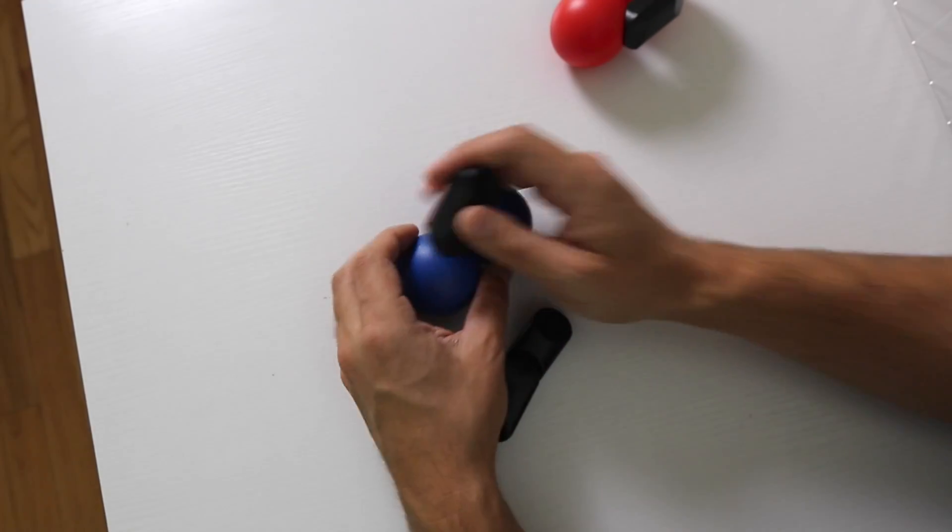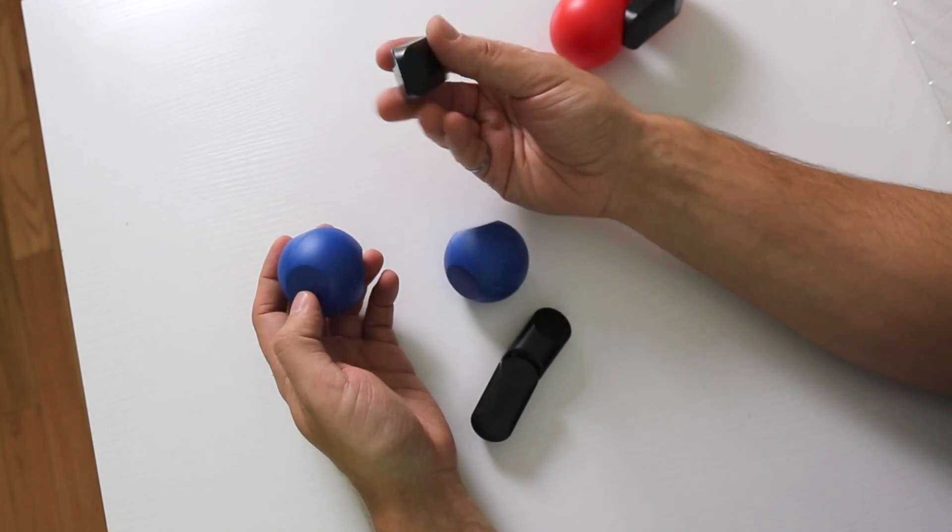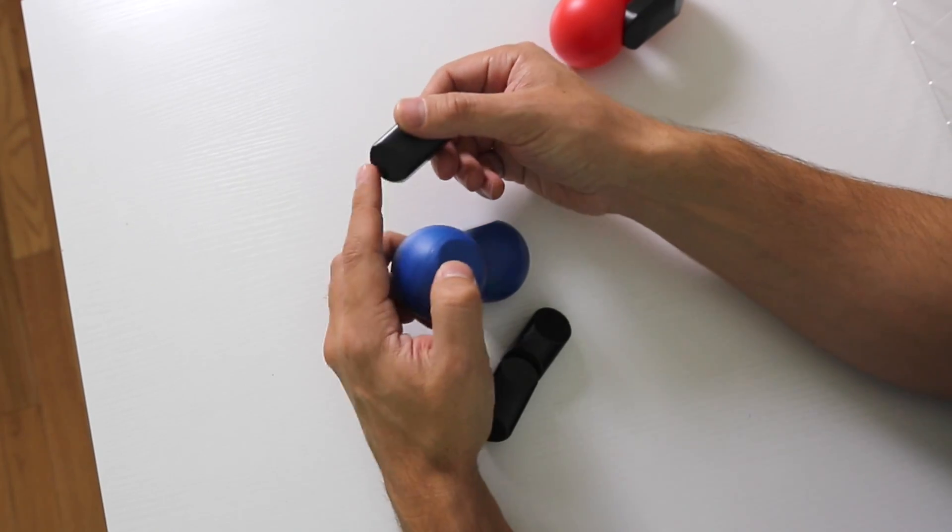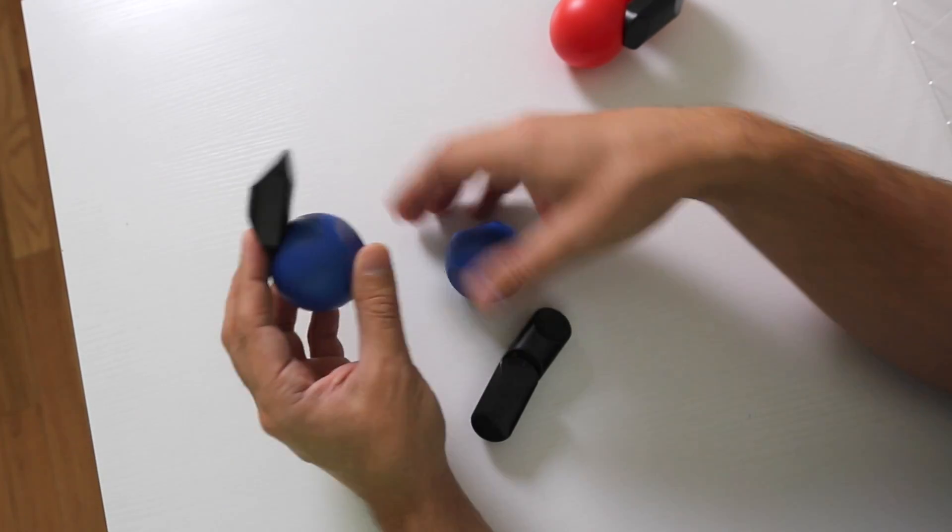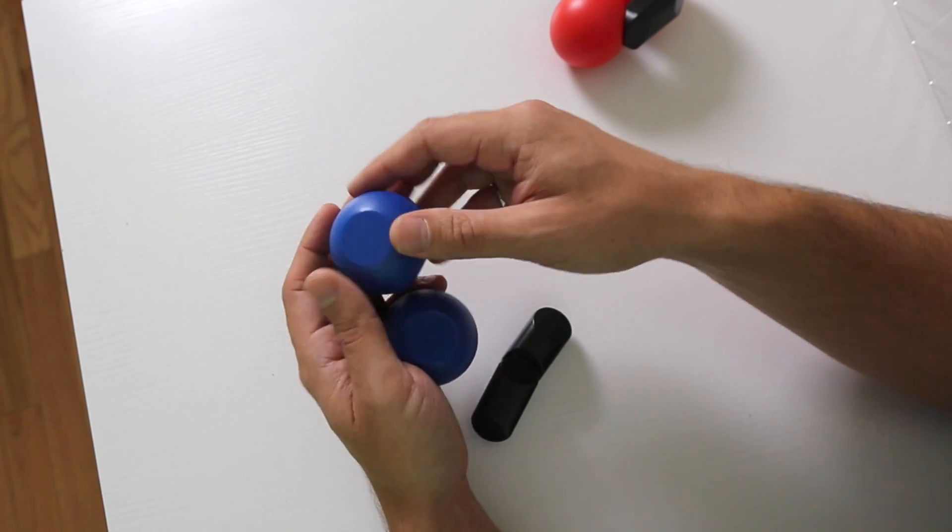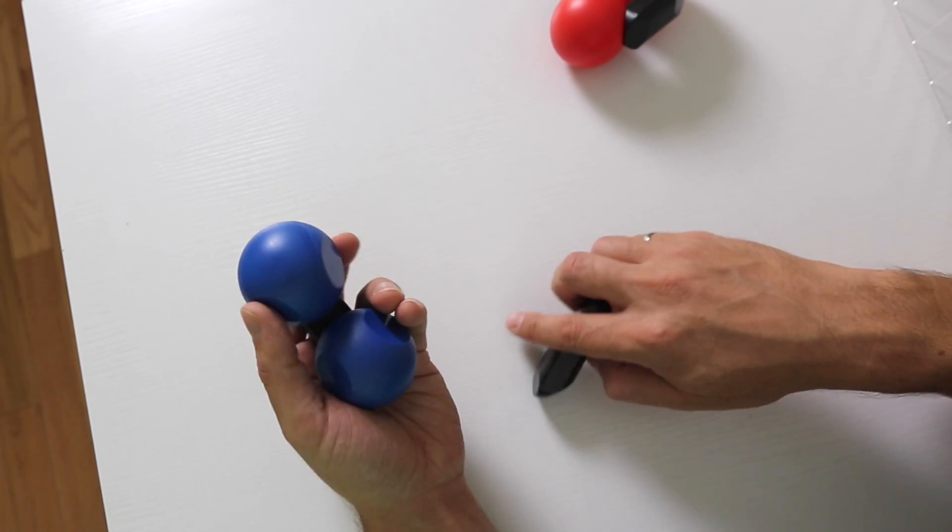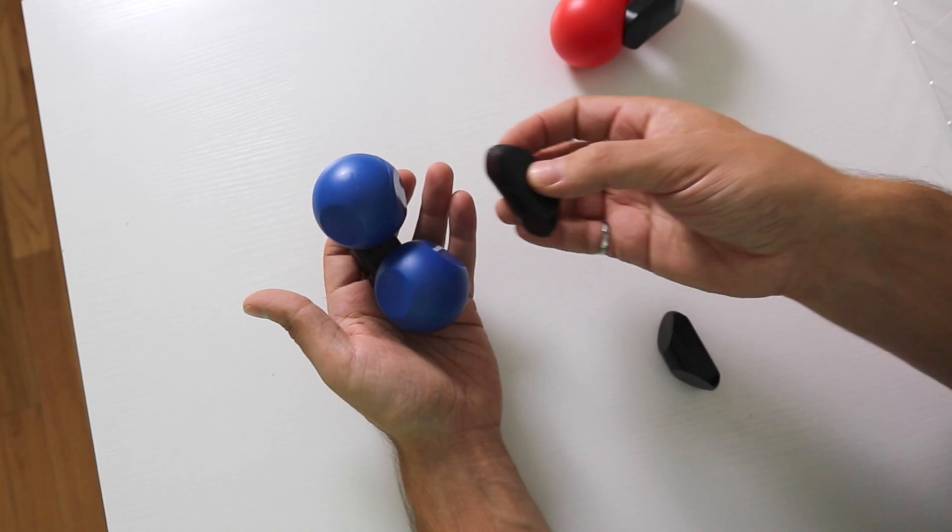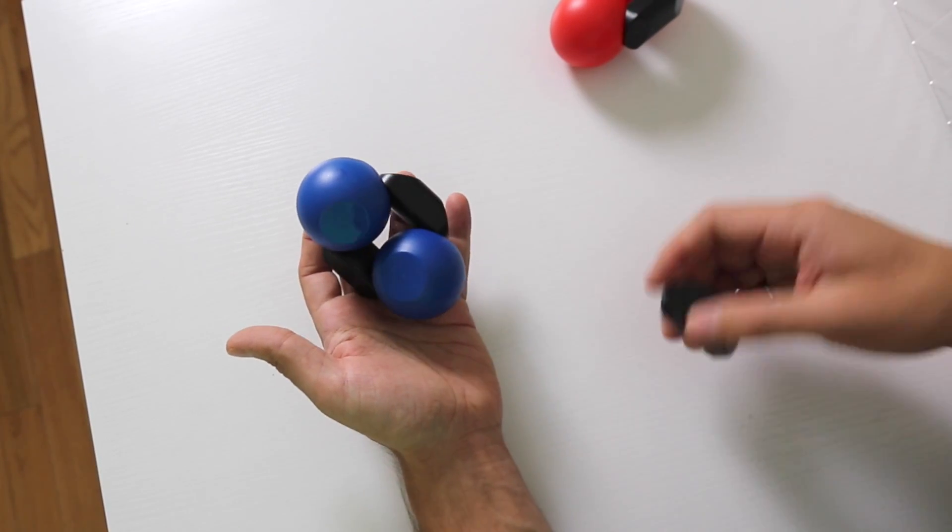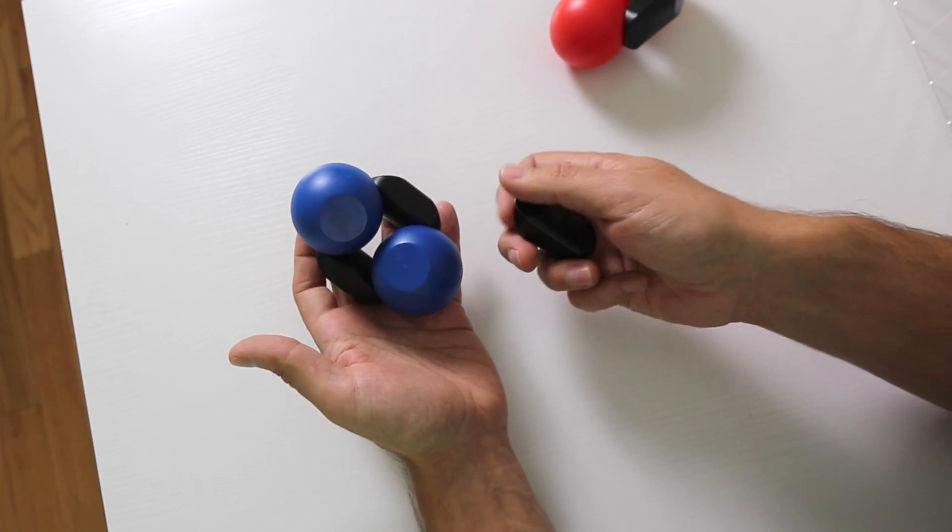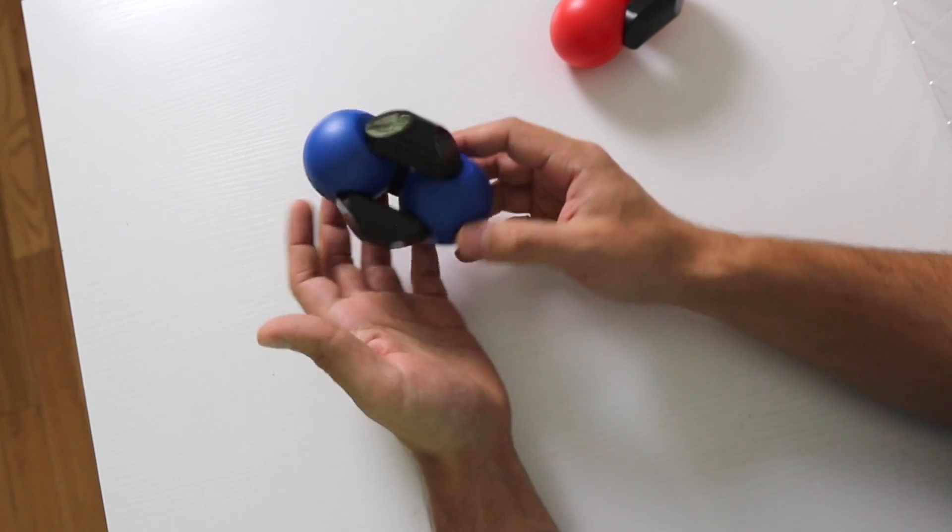So we need three of these pieces. And you use the small flat side to attach to the nitrogens like that. Try to get those flat surfaces facing each other. Then you attach the next one. Again, make sure you've got the small flat side. And finally the third one.